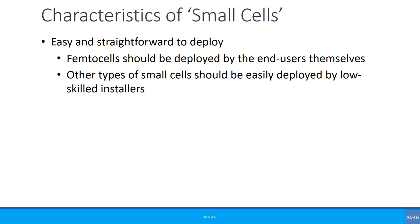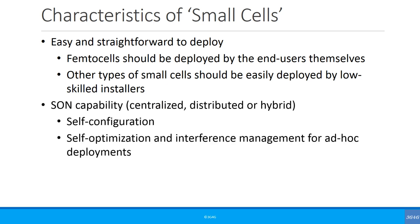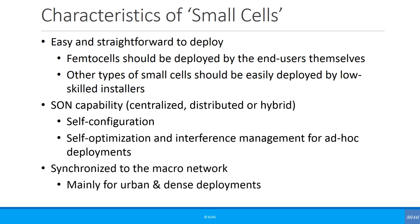Characteristics of small cells: they should be easy and straightforward to deploy — femtocells should be deployable by end users themselves, while other small cells should be deployable by low-skilled installers. They should have self-organizing network (SON) capability for self-configuration and self-optimization, including interference management, especially since small cells can be deployed in an ad-hoc manner. They should be synchronized to the macro network, especially important for urban and dense deployments, and flexible on backhaul capability.